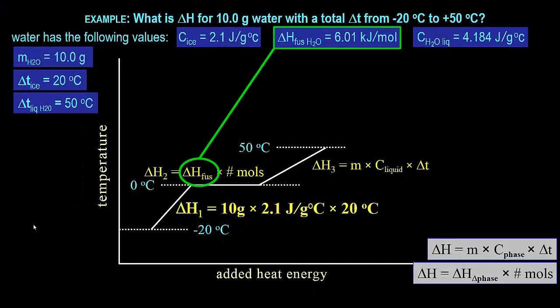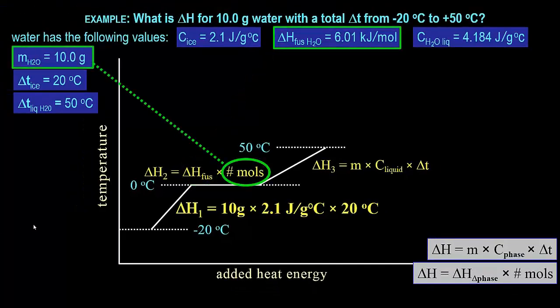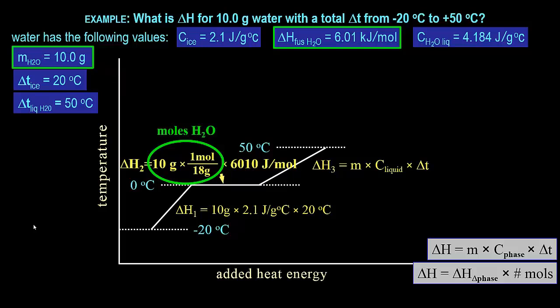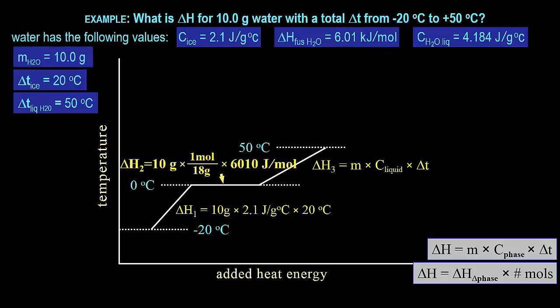For the second energy change, we have the heat of fusion and the mass. But we need moles since heat of fusion is given per mole, so the molar mass of water is used to convert mass to moles. Also, since delta H1 is in joules, we convert kilojoules to joules to keep the units consistent. Grams and moles cancel, leaving joules for delta H2.